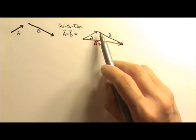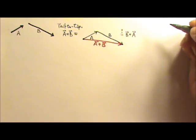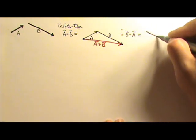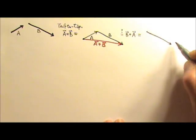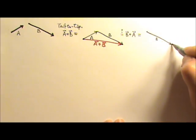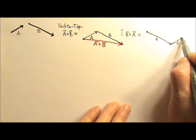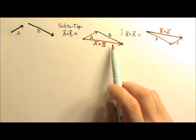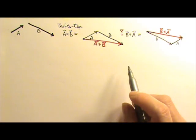What if we copy vector B first? Does A plus B equal B plus A? If we do B plus A, we copy down vector B first — same length, same direction — then place the tail of A at the tip of B. Comparing carefully, you'll see the result is exactly the same. So yes, they are equal, which means vectors follow the commutative law of addition.